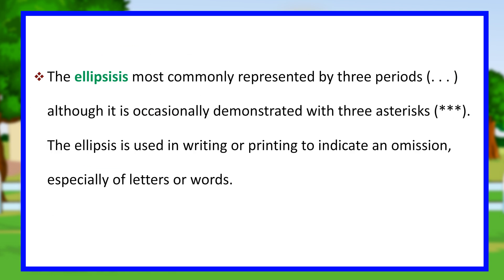The ellipsis is most commonly represented by three periods, although it is occasionally demonstrated with three asterisks. The ellipsis is used in writing or printing to indicate an omission, especially of letters or words.